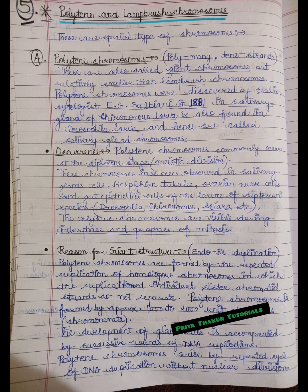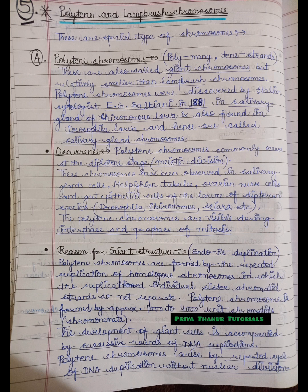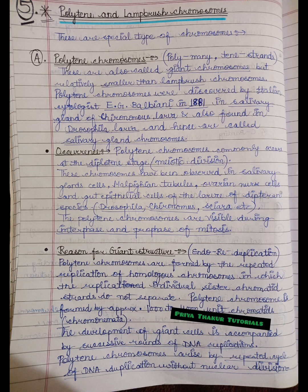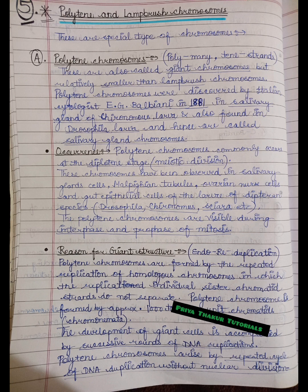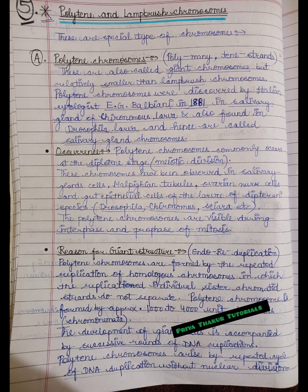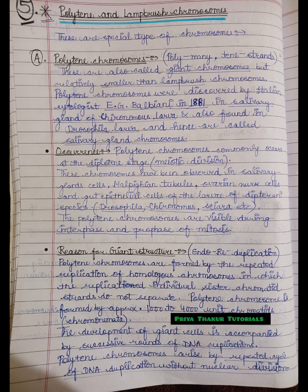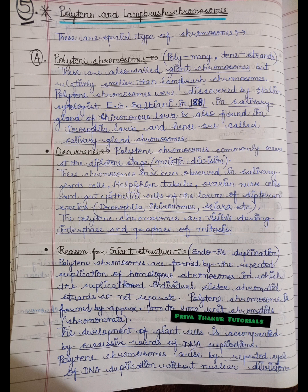Polytene chromosomes were discovered by Italian cytologist E.G. Balbiani in 1881 in the salivary glands of Chironomus larva, and also found in Drosophila larva. Hence they are called salivary gland chromosomes, because they are found in the salivary glands.